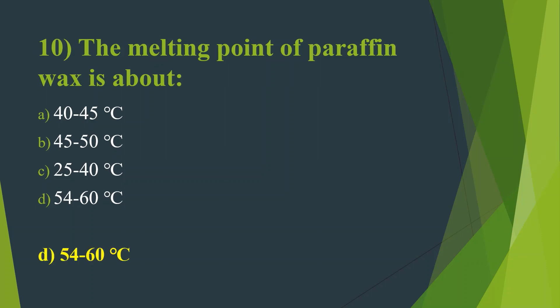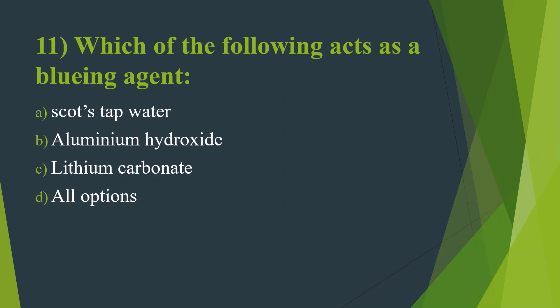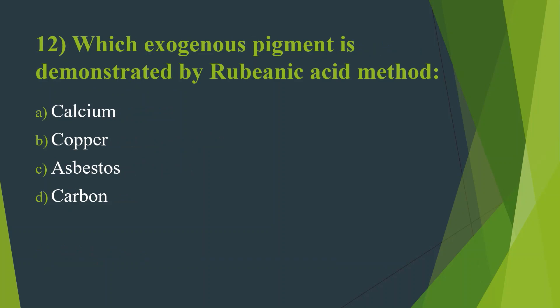Eleventh question: Which of the following acts as a bluing agent? Option A: Coarse tap water. Option B: Aluminium hydroxide. Option C: Lithium carbonate. Option D: All options. Here the answer is Option D — All options. Bluing is the conversion of the initial soluble red color of hematoxylin within the nucleus to an insoluble blue color. Coarse tap water, aluminium hydroxide, and lithium carbonate all act as bluing agents due to their alkaline pH.